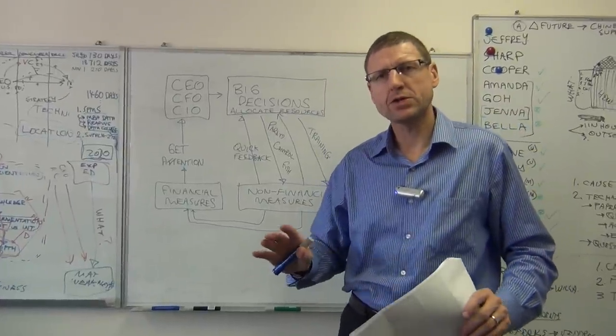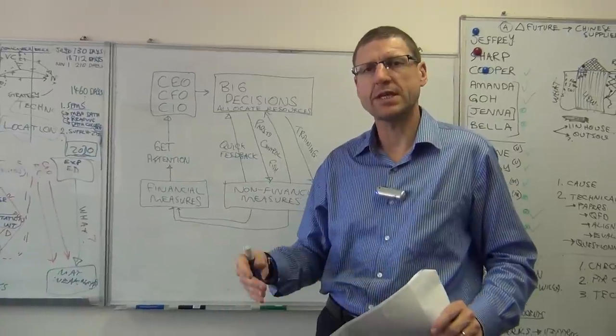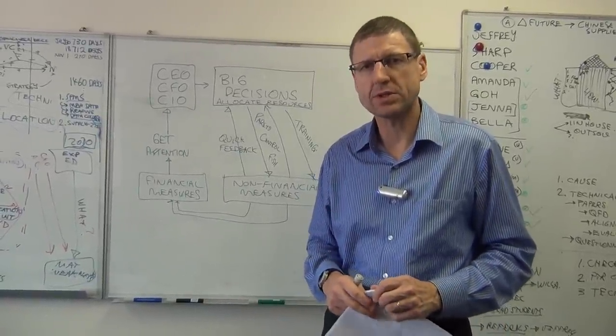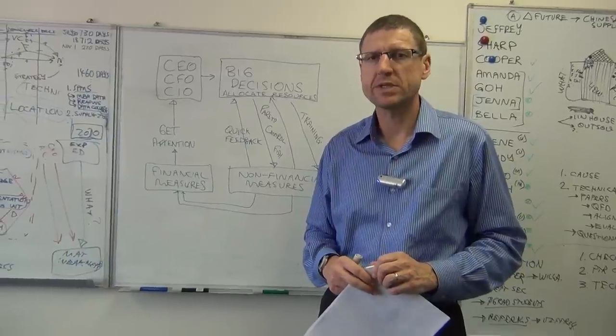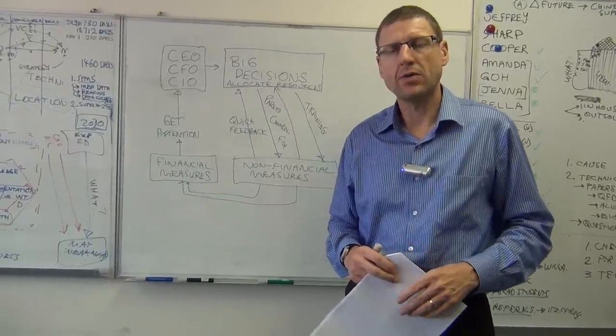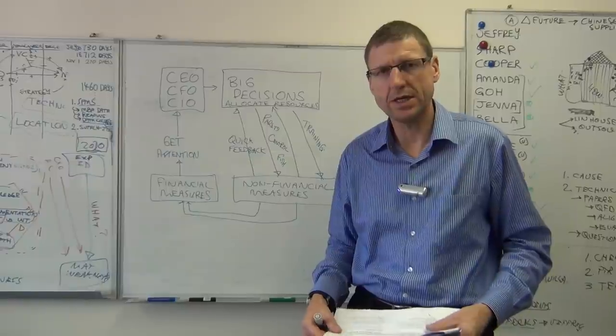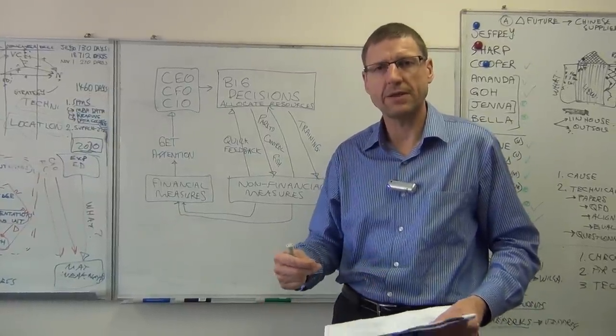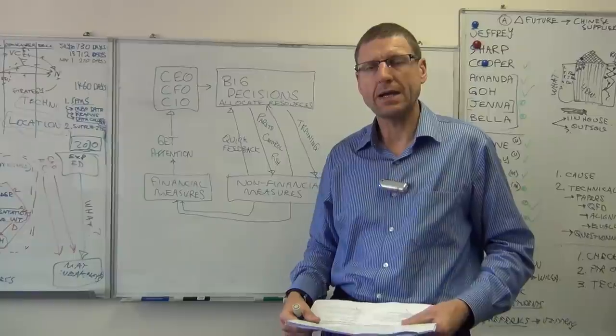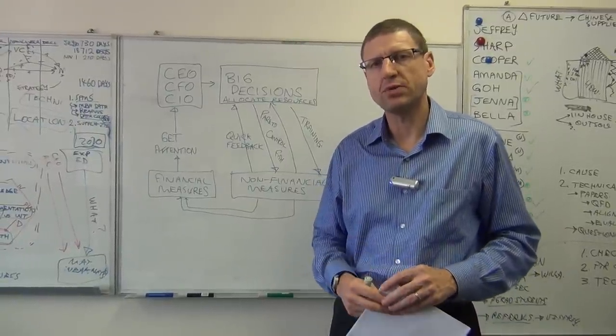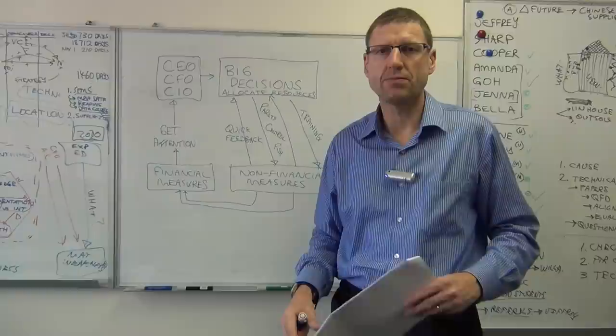Now what we're going to talk about this week is an extension of last week. Last week, in week eight, we looked at the balanced scorecard. We looked and focused a lot on how the balanced scorecard is used in organizations to support strategy as a formal extension of a firm strategy.